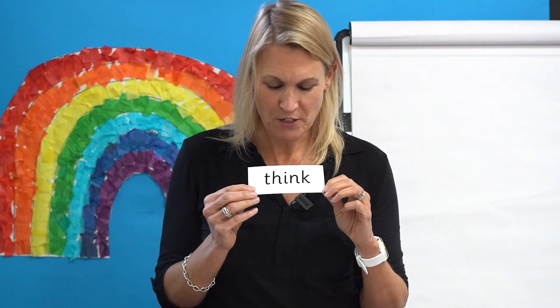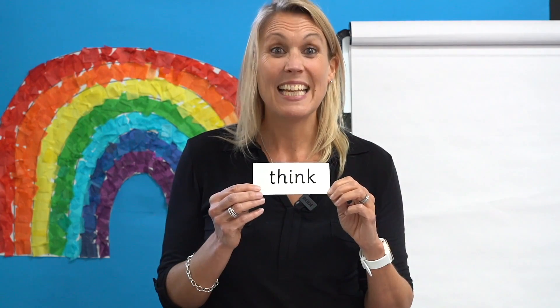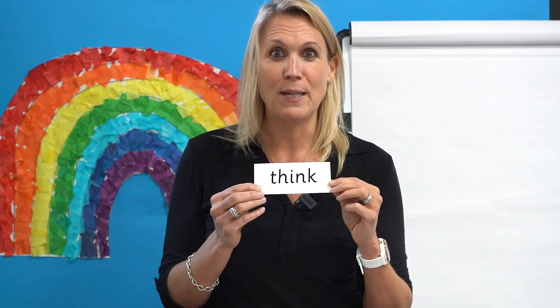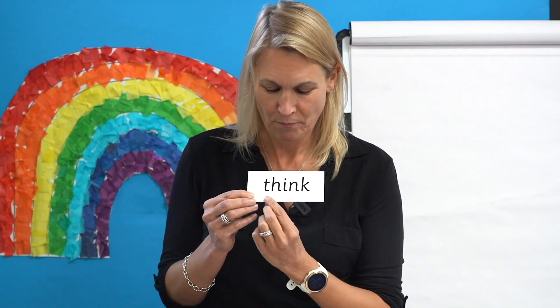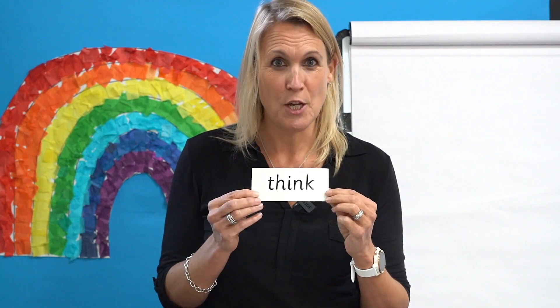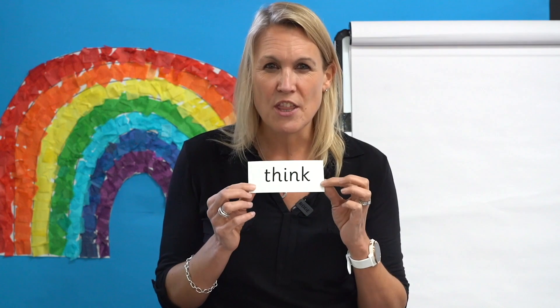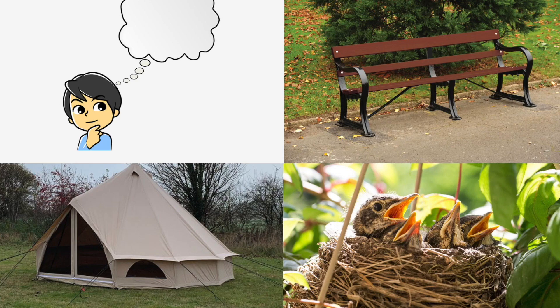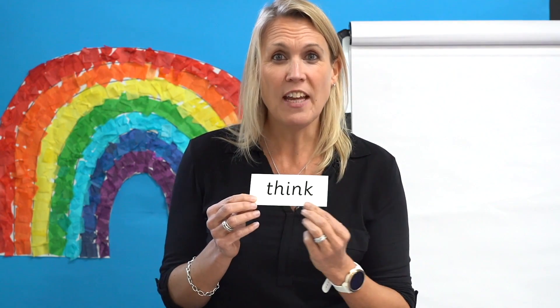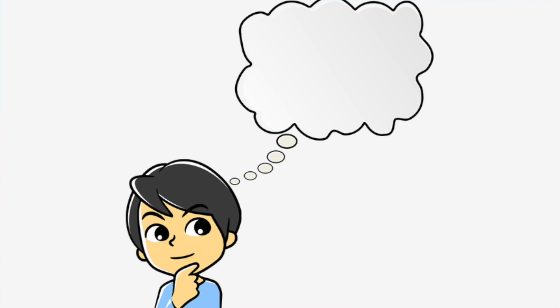Now let's have a look at this word. Can you spot the digraph? Yes. The digraph is th. Read each sound as I point and blend to read the word. Look at the pictures. Point to the picture that matches this word. TH-I-N-CH. Think. Here is someone thinking. Did you get it right?